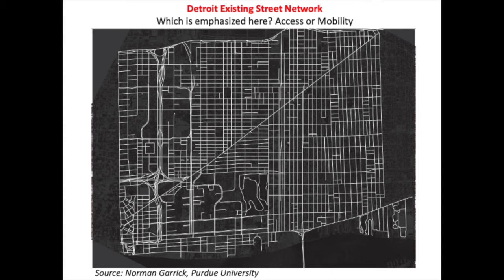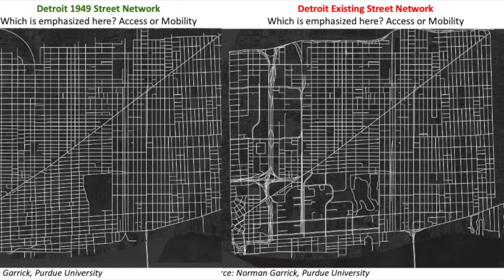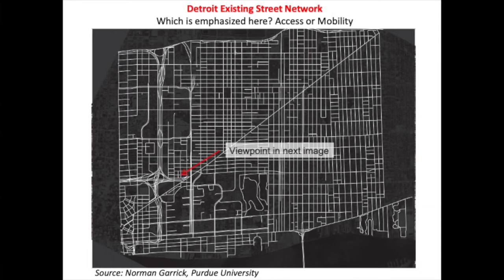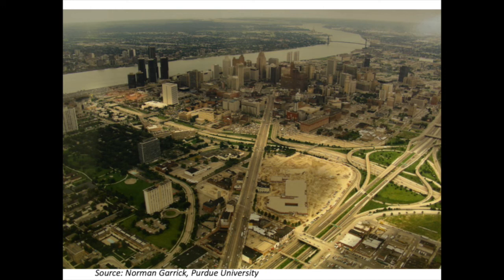The impact of a mobility-oriented planning focus is even more apparent when we compare the two networks side by side, examining the city's central core and west side — accessibility has all but vanished in favor of moving people quickly through the city in cars. A look at the contemporary city from a bird's eye view gives a better sense of the land use impacts of mobility-based planning. Ask yourself: does this look like a place that is friendly for pedestrians or cyclists to navigate?